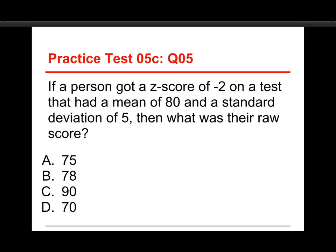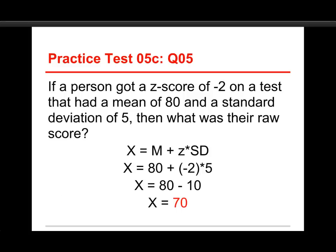Finally, number five. If a person got a z-score of negative 2 on a test that had a mean of 80 and a standard deviation of 5, then what was their raw score? Choices are 75, 78, 90, or 70. In this case, the answer is 70. And let's look at how the formula works.